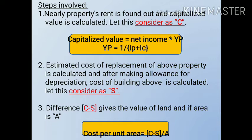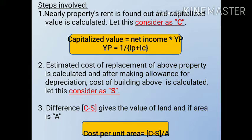Let us consider the capital value as capital C. The capitalized value is equal to net income multiplied by YP, where YP stands for years purchase. YP is given by the formula: 1 divided by (IP plus IC), where IP plus IC means the rate of interest on capital value plus the rate of sinking fund. The next step is to calculate the estimated cost of replacement of the above property, and after making allowance for depreciation, the cost of the building is calculated. Let us consider this as capital S.